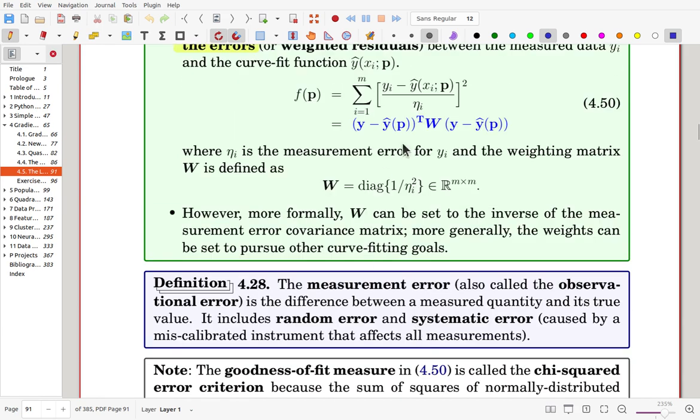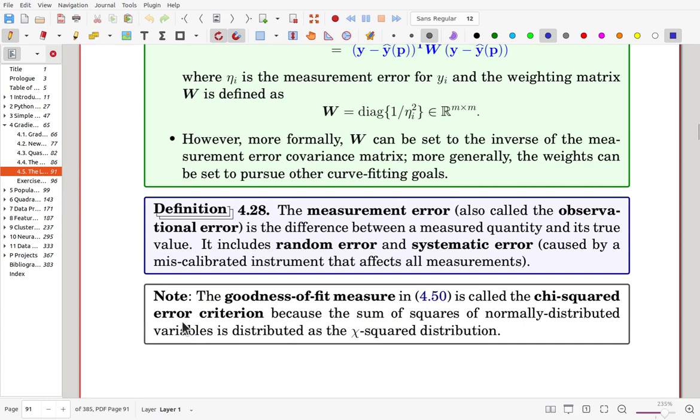The objective function here is called the chi-squared error criterion because the sum of squares of normally distributed variables becomes the chi-squared distribution.